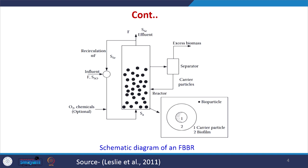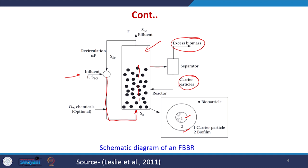This is the schematic diagram of a fluidized bed bioreactor (FBBR). The influent comes from here and goes from the bottom of the reactor inside the fluidized bed. The fluidized bed contains the bioparticles, shown as dark circles, which essentially consist of a carrier particle on which a biofilm is grown. Once the water passes through the system and treatment happens, a separator unit separates the carrier particles and excess biomass. The carrier particles are recycled back into the reactor to maintain the required concentration of bioparticles, and the treated effluent goes out from the top.